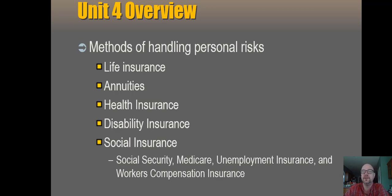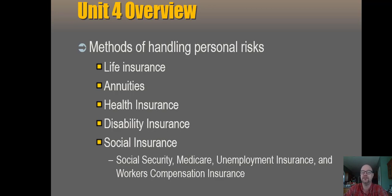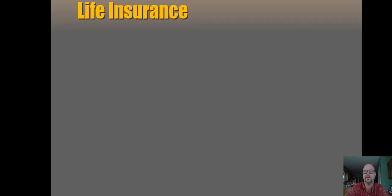What happens if my income is interrupted permanently? Life insurance — we've got that. What if my income is interrupted temporarily? With disability insurance, that's the tool that will help us in that situation. Then we've got social insurance programs: we'll talk about helping people save for retirement through Social Security, Medicare as a way to help people in retirement deal with expensive health care, unemployment insurance, and workers' compensation. Those are our four big social insurance programs in the U.S.